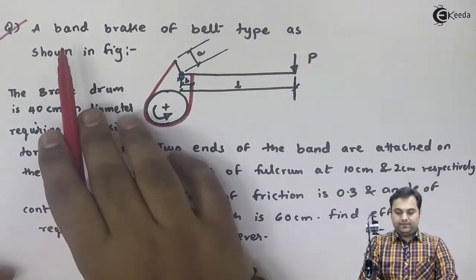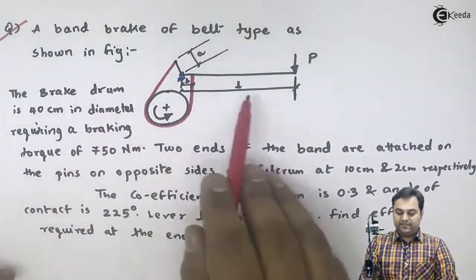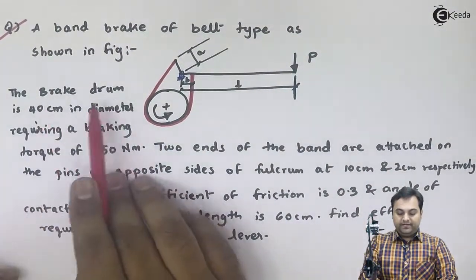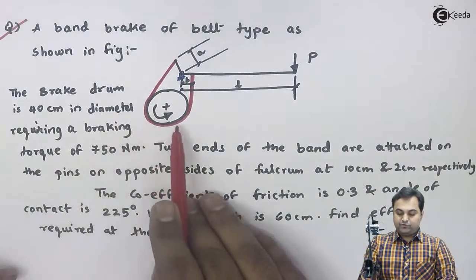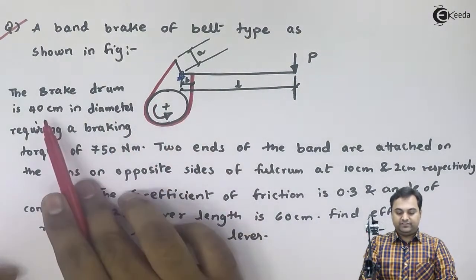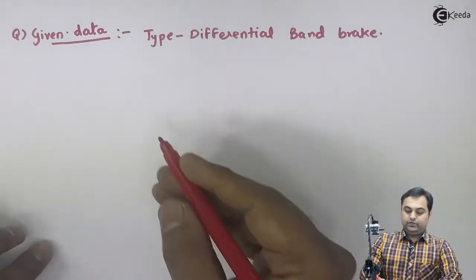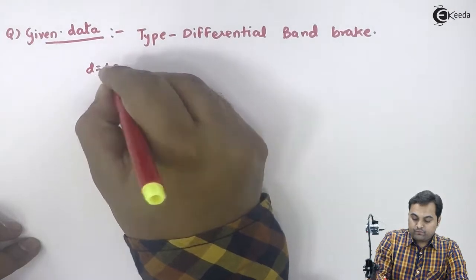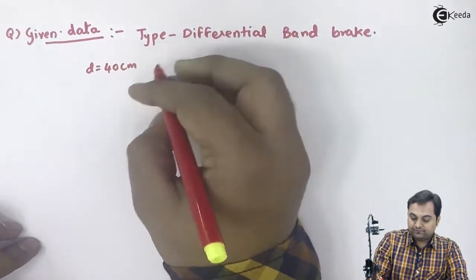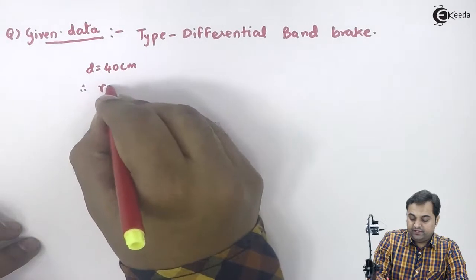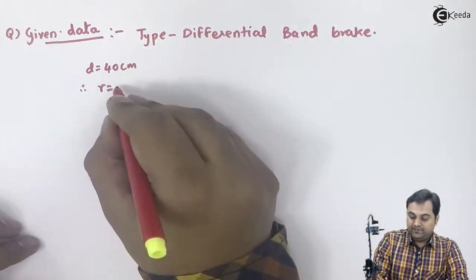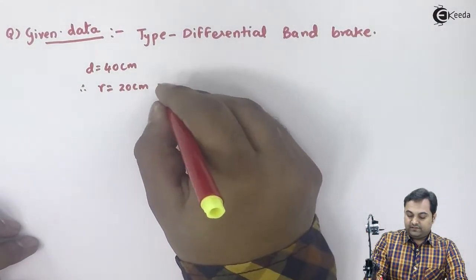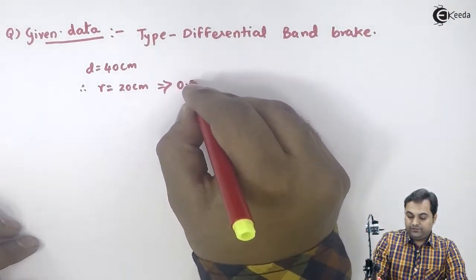In the question it is given that a band brake of belt type is as shown in the figure. The diagram is given to us. The brake drum is 40 cm in diameter, so D is equal to 40 cm. Therefore the radius of the brake drum will be half of this, so it becomes 20 cm, which is 0.2 m.